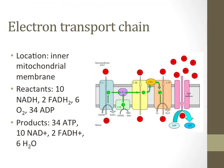As the text on the left shows, the reactants of this chemical process are 10 NADH, 2 FADH2, and 6 oxygen molecules, as well as 34 ADP molecules. The products of this process are 34 ATP molecules, 6 water molecules, and the remnants of NADH and FADH2, which are NAD+ and FADH+.